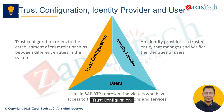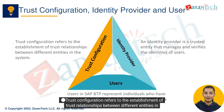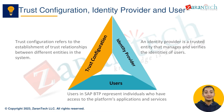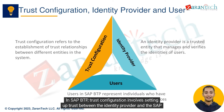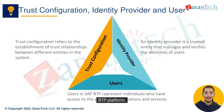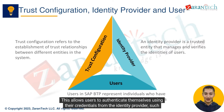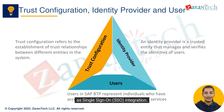Trust configuration refers to the establishment of trust relationships between different entities in the system. In SAP BTP, trust configuration involves setting up trust between the identity provider and the SAP BTP platform. This allows users to authenticate themselves using their credentials from the identity provider, such as through single sign-on (SSO) integration.